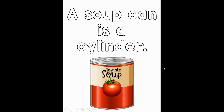A soup can is a cylinder. A soup can is an example of a real object that's shaped like a cylinder. It's got a flat surface at the top where the lid of the can is, a flat surface at the bottom, and then it is completely curved in the middle.